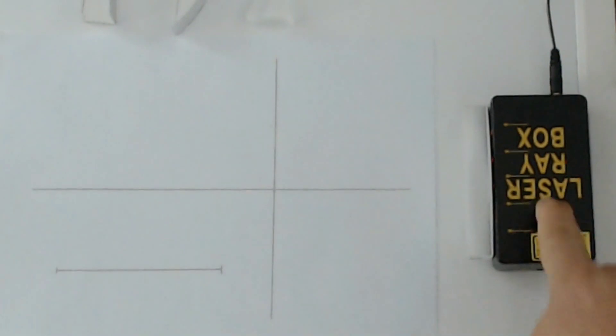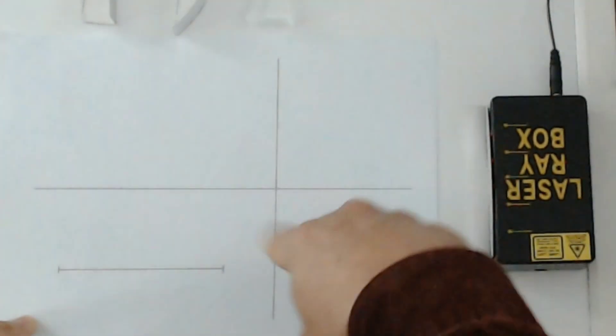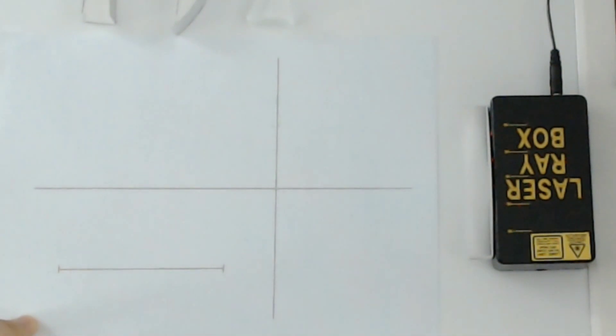I have here a laser box and a piece of paper on which I've prepared a set of axes. I've also given you a 10 cm long object that you can use to calibrate when you do the measurements.